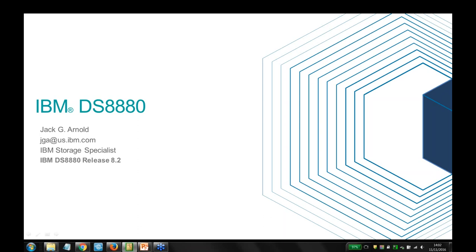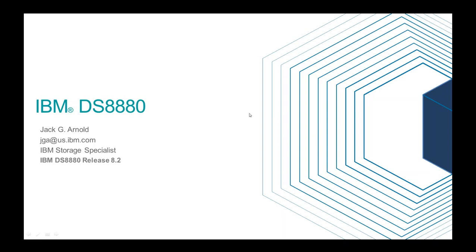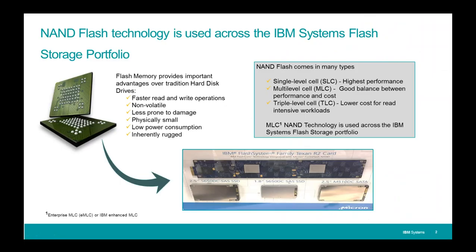Let's get in and talk about the DS8880 Release 8.2. The main focus of this announcement is the IBM DS8000 use of flash memory. We've had varieties of flash memory in use in the DS8000 line for some time — since the days of the DS8100 and DS8300. At that time we started using SLC memory, then moved on to MLC memory. Other parts of IBM, such as the Deep Flash 150, are using TLC memory. Flash memory can come in a variety of forms.